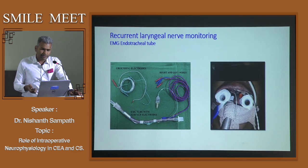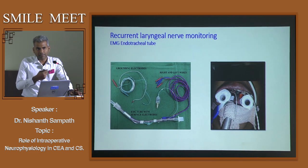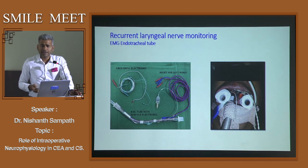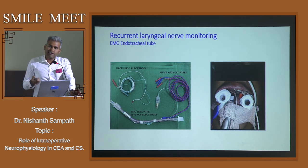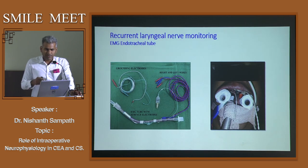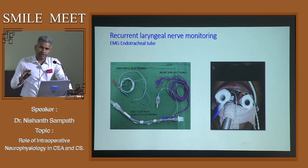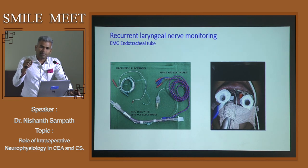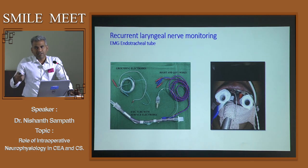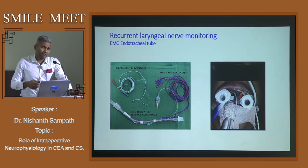Another application is recurrent laryngeal nerve monitoring. When operating near the neck, there is a possibility of dysphagia due to damage to the recurrent laryngeal nerve. We can monitor it by placing an electrode close to the vocal cords using a special EMG endotracheal tube — a normal endotracheal tube with a pickup electrode. When the anesthetist places the tube so the pickup electrode contacts the vocal cords, any irritation of the recurrent laryngeal nerve produces a myogenic response that we can relay to the surgeon.